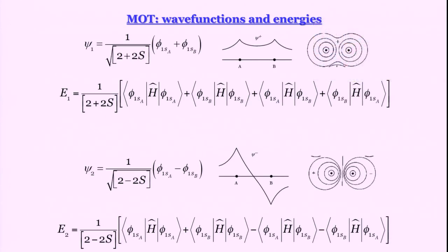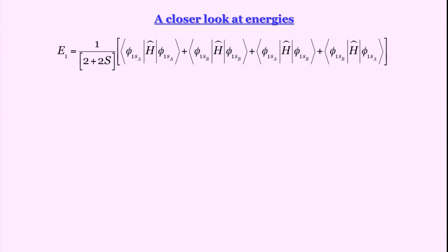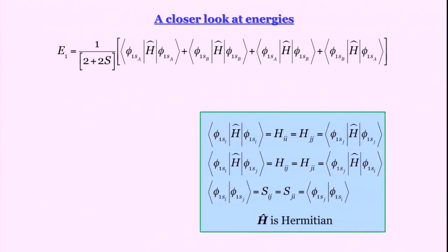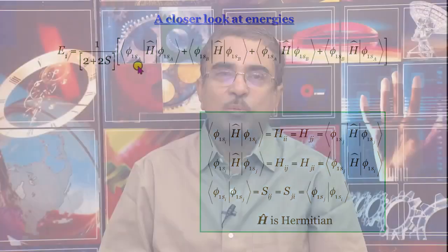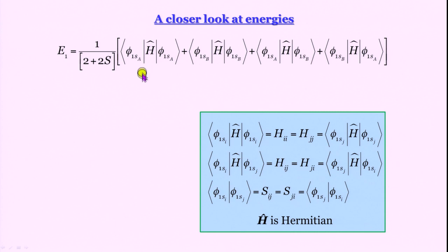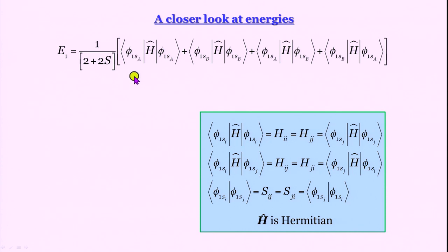Let us evaluate these terms one by one. We have the wave functions and the expectation value expressions for the bonding and anti-bonding energies. Since we do not know what these integrals are, we define them. When we have the same orbital in both the bra and ket vectors, we call that integral H_ii or H_jj. When we have 1s_a in the bra vector and 1s_b in the ket vector or vice versa, we call it H_ij.